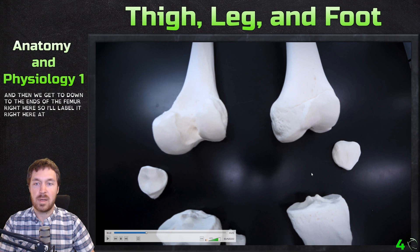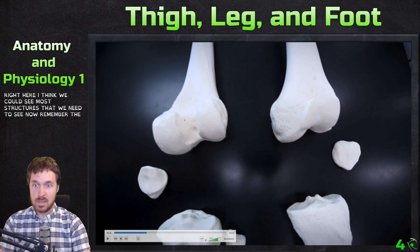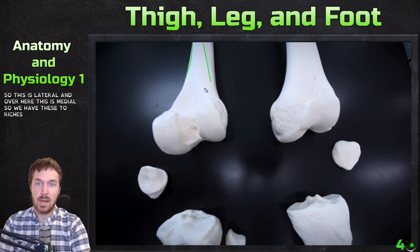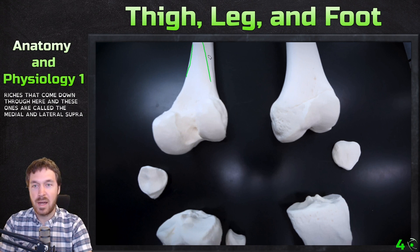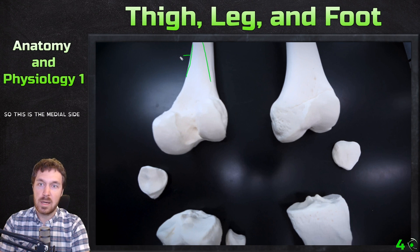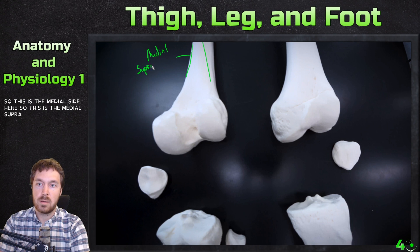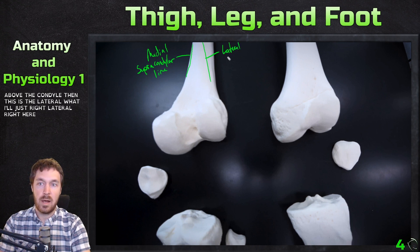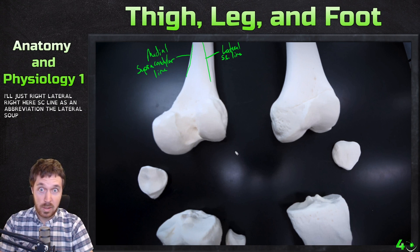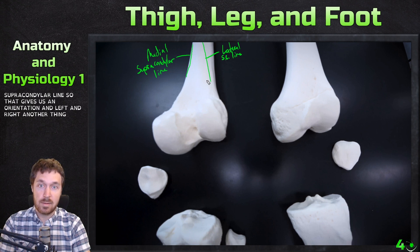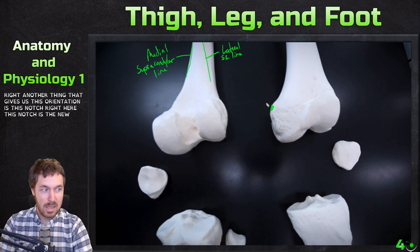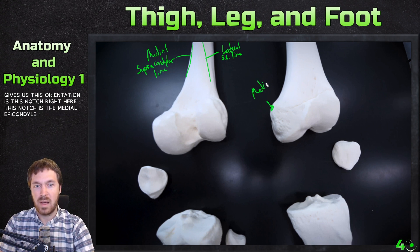At the distal femur, remember this side of the figure is flipped, so this is lateral and this is medial. We have two ridges coming down — these are called the medial and lateral supracondylar lines. So here on the medial side is the medial supracondylar line, and this is the lateral supracondylar line. Those give us our medial and lateral orientation.